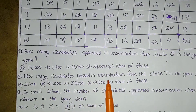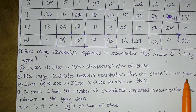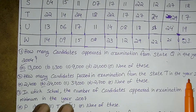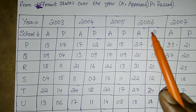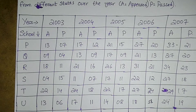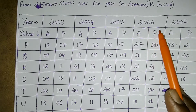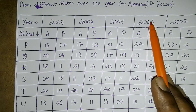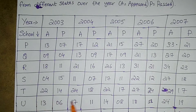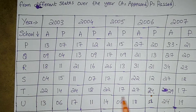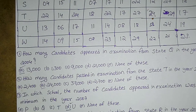How many candidates passed in examination from state T in the year 2006? P stands for passed. From 2006, related to state T — the answer is 24,000.